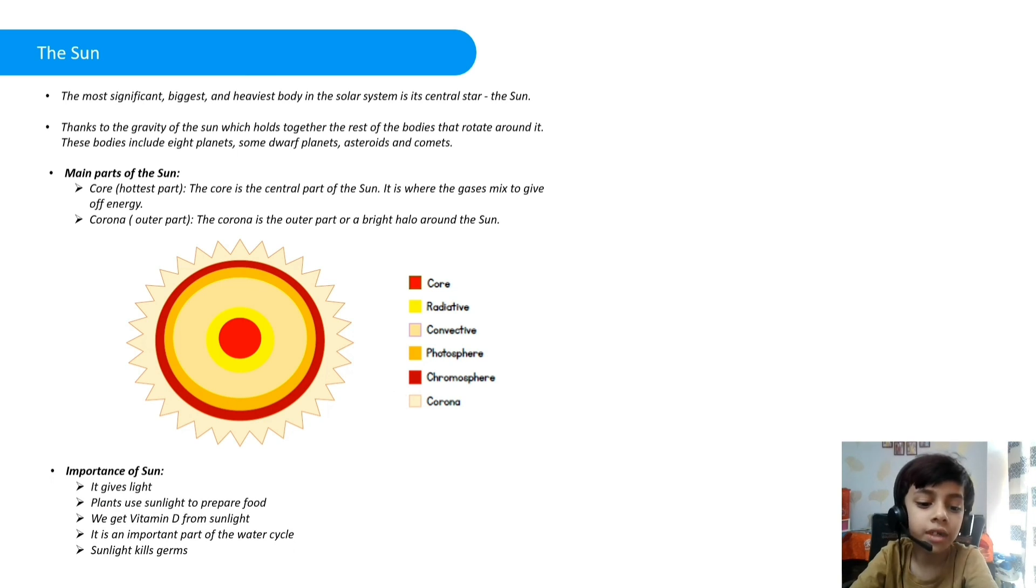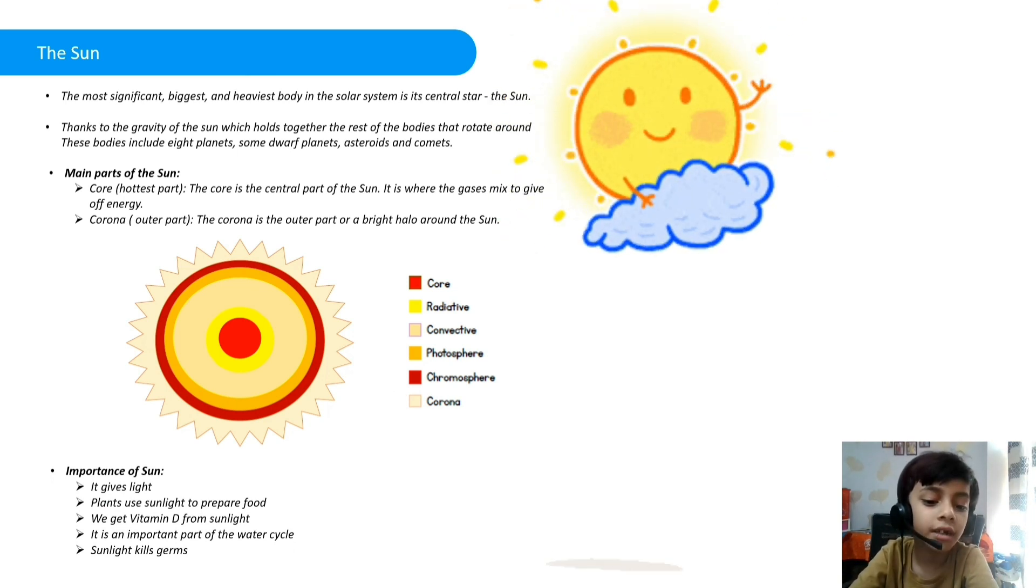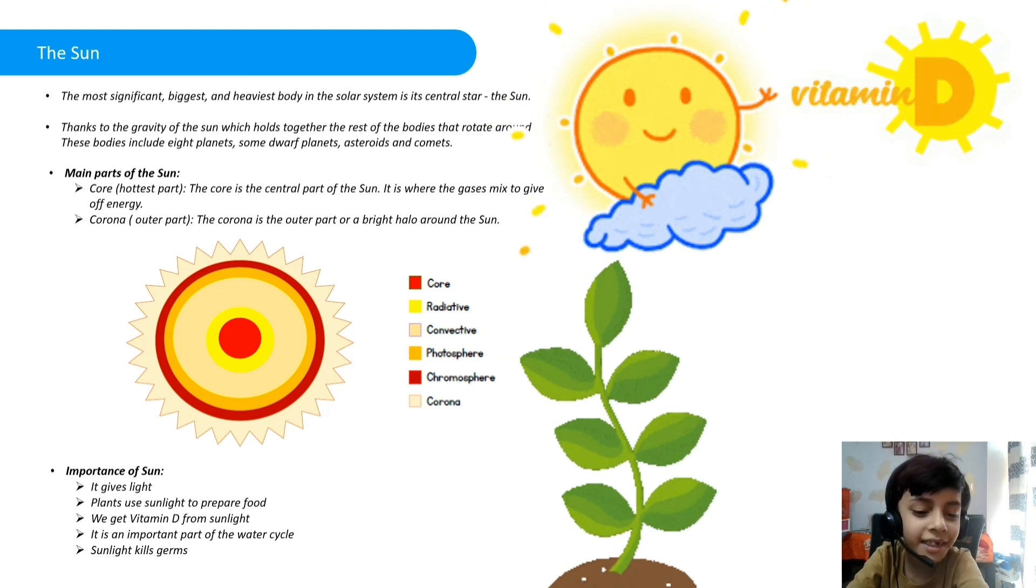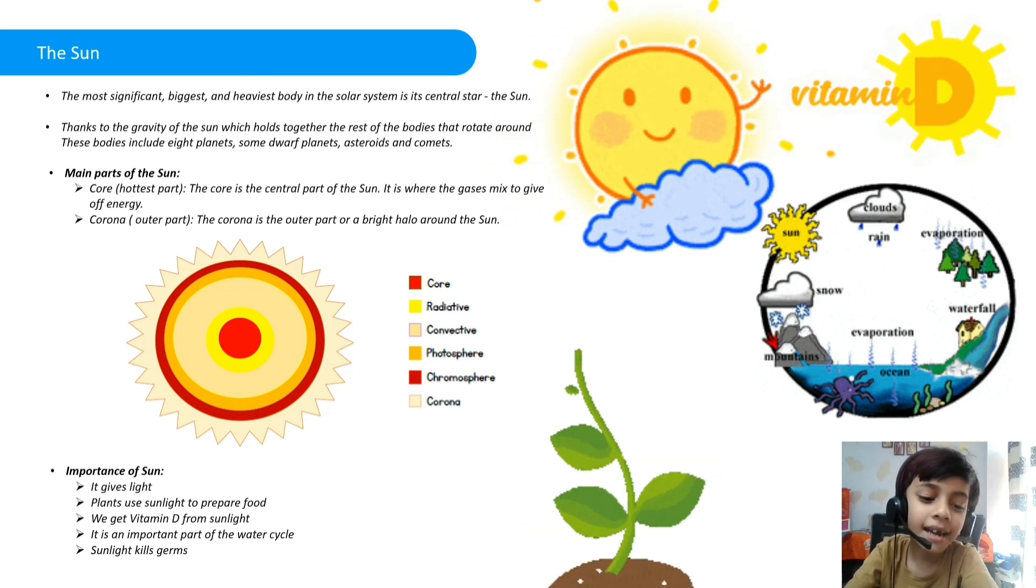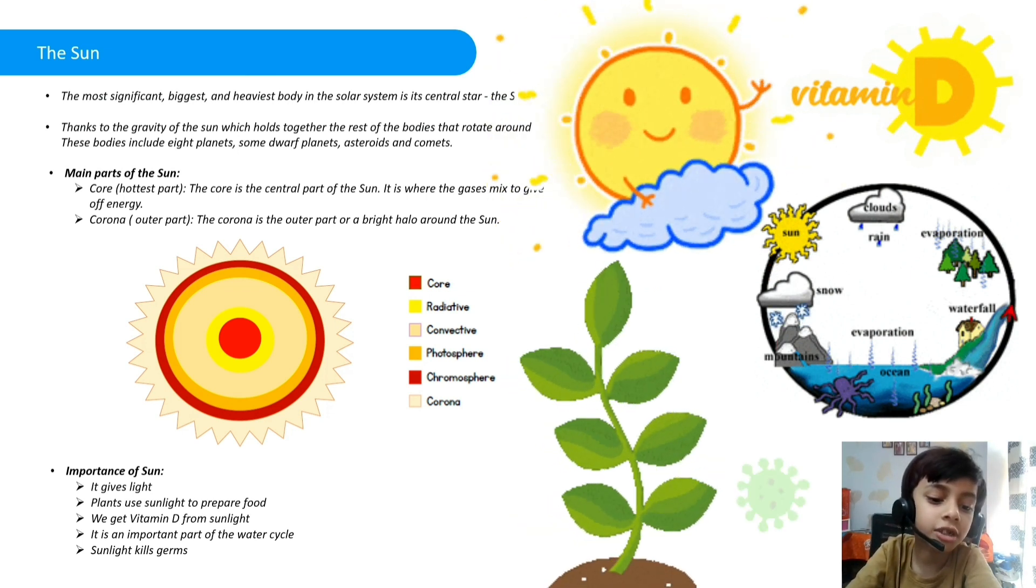The importance of sun: it gives light, plants use sunlight to prepare food, we get vitamin D from sunlight, it is an important part of the water cycle, and sunlight also kills germs.